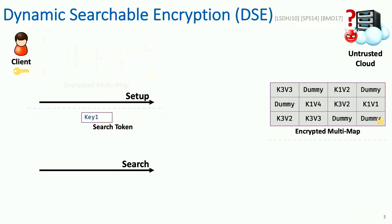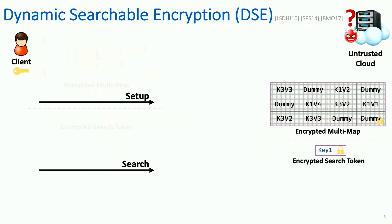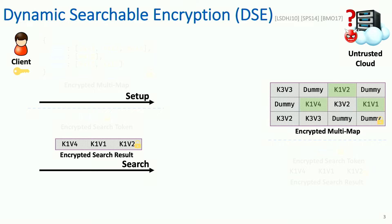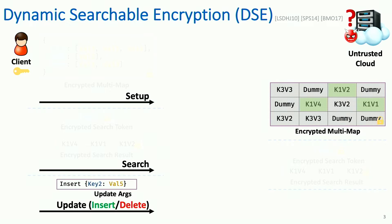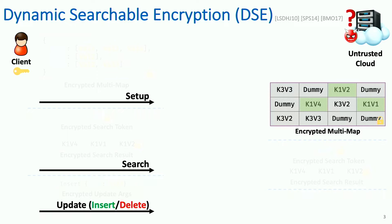The second protocol is search, where there's a keyword or key that the client wants to search for, encrypts it in a manner that the server cannot see into it but still can perform the search, sends it, and as a result the server accesses the necessary memory allocations and returns the results. Lastly, there's update, which boils down to insertions and deletions of key-value pairs, again encrypting to only give as much information as necessary.